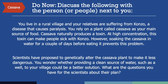To introduce the first case study on cassava, we would like people to consider the following scenario. Imagine you live in a rural village and your relatives are suffering from konzo, a disease that causes paralysis. You rely on a plant called cassava as your main source of food. Cassava naturally produces a toxin, and at high concentration, this toxin can make people sick with konzo. However, soaking the cassava in water for a couple of days before eating it prevents this problem. Scientists have proposed to genetically alter the cassava plant to make it less dangerous. Do you wonder whether providing a clean source of water, such as a well, to your village could be a better solution? What are the questions you have for the scientists about their plan? You may want to pause here to think about your own answer to this question.